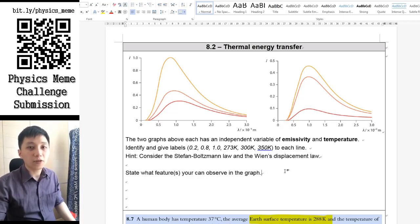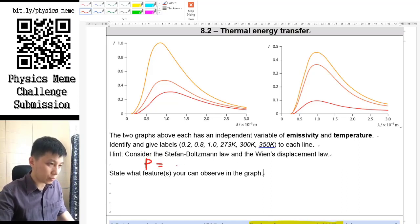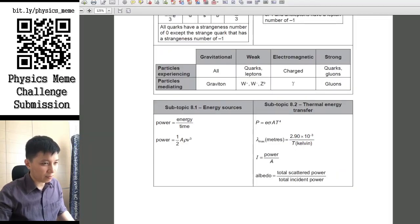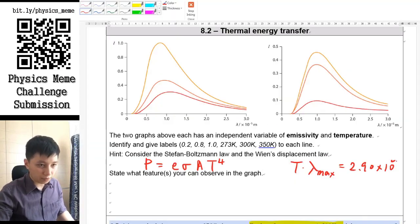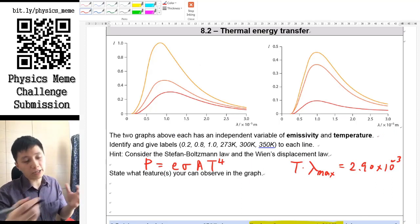First of all, I would like to record the equations. For Stefan-Boltzmann law, that will be P = ε σ A T^4. For Wien's displacement law, I can remember that is T × λ_max = 2.90 × 10^-3. This is the first thing that you want to record because from the equation you can deduce the relationship very easily.